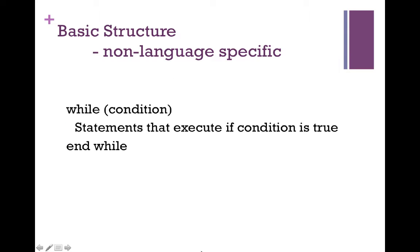The basic structure of a while loop begins with the keyword while and is followed by the condition that will be tested. When this condition is true, the statements inside of the while block are going to execute. And once those conditions change to false, our while loop will exit and will continue on with the rest of our program.